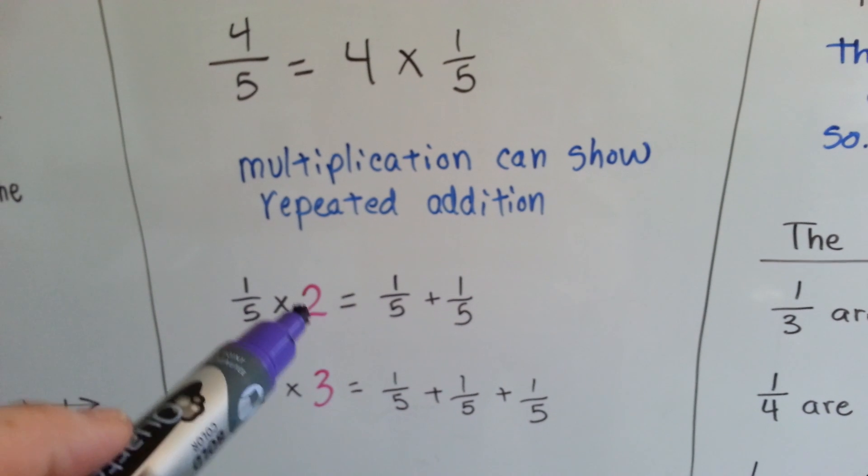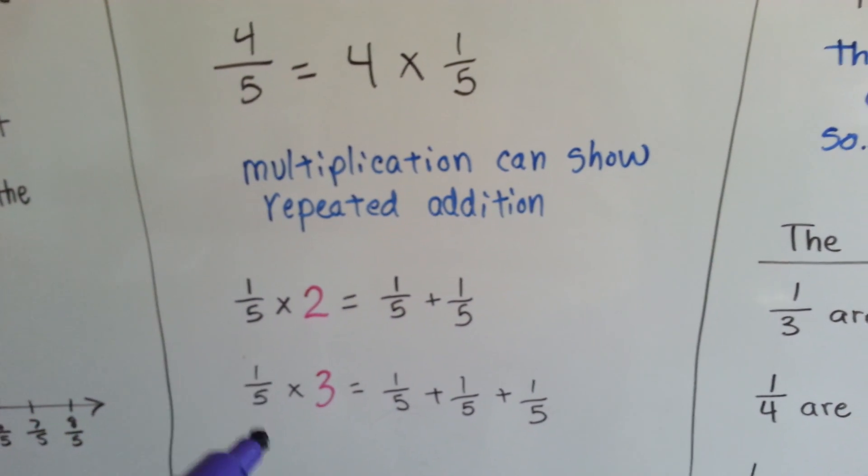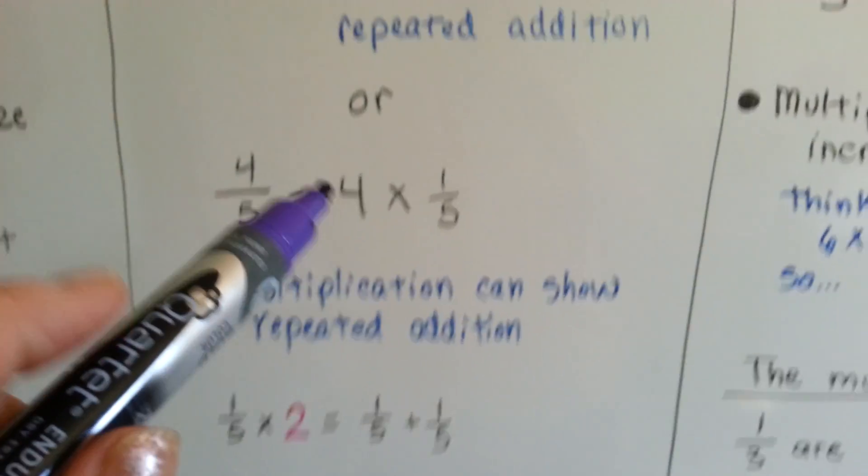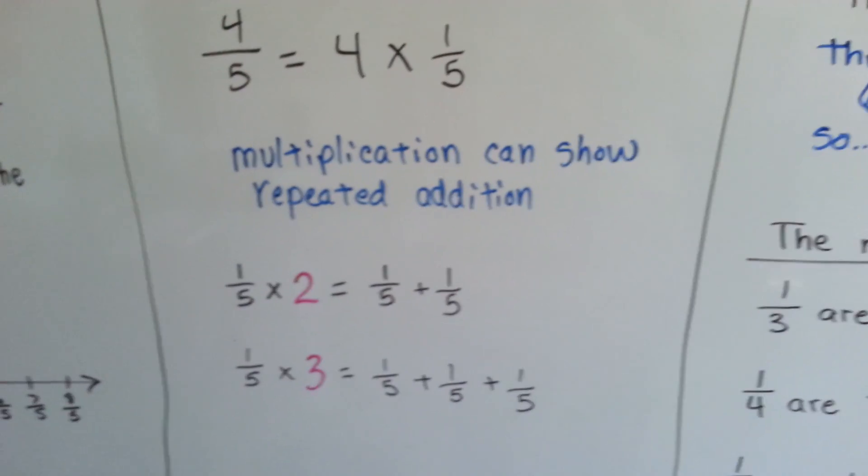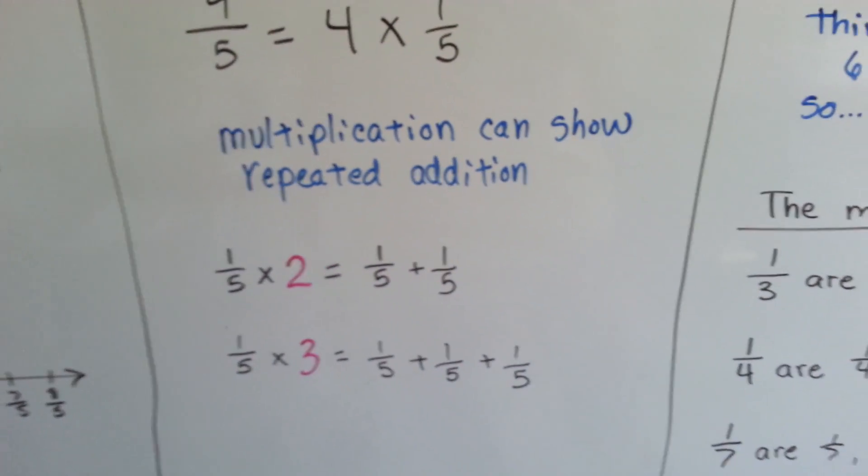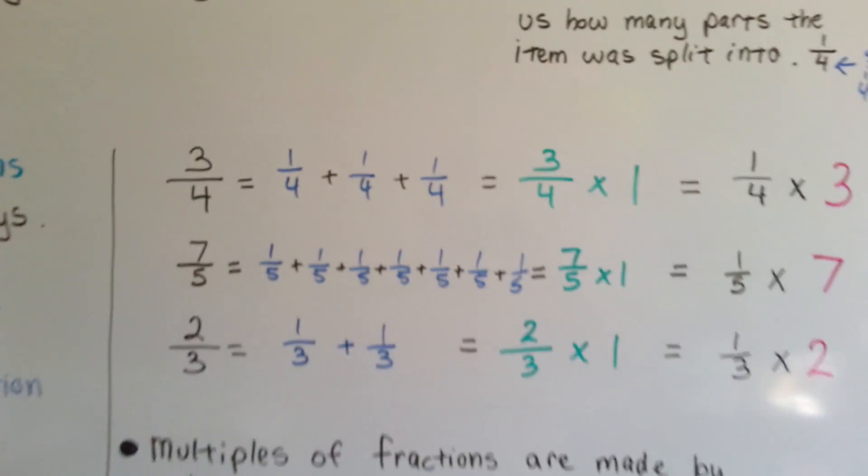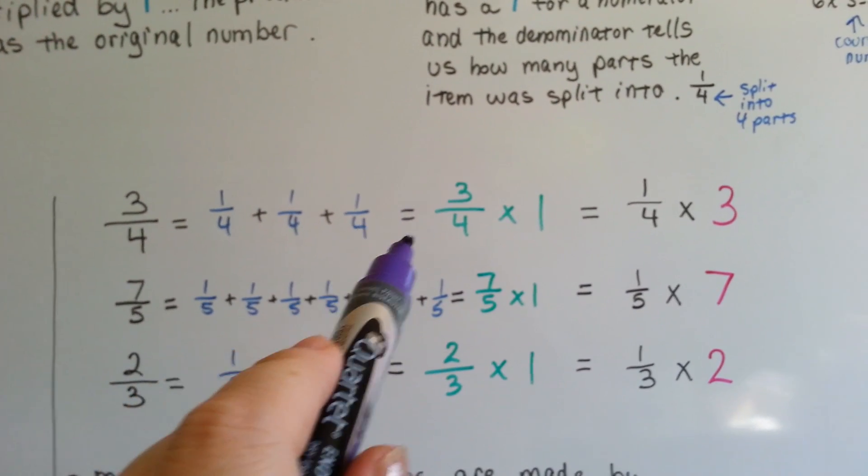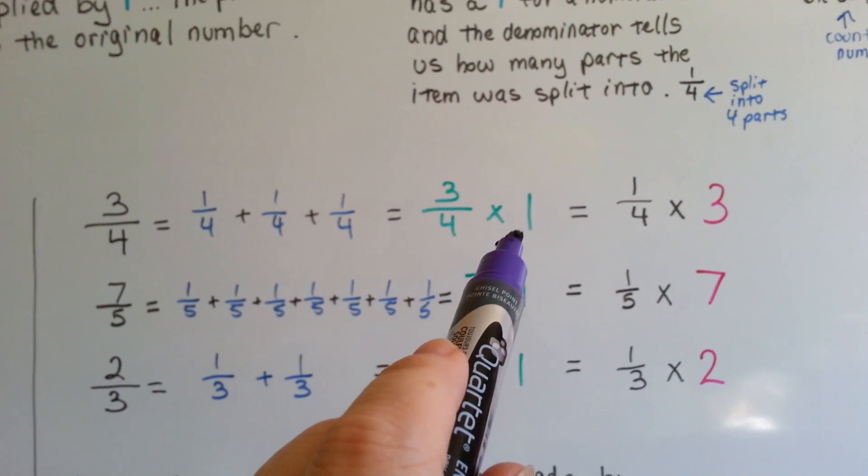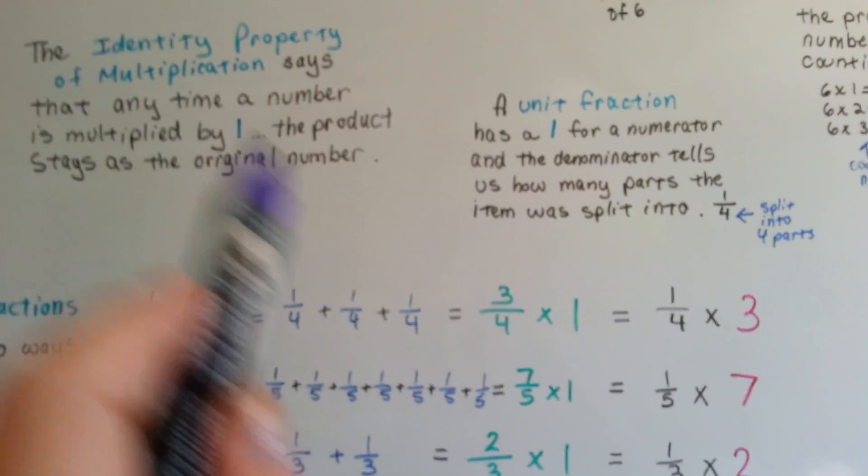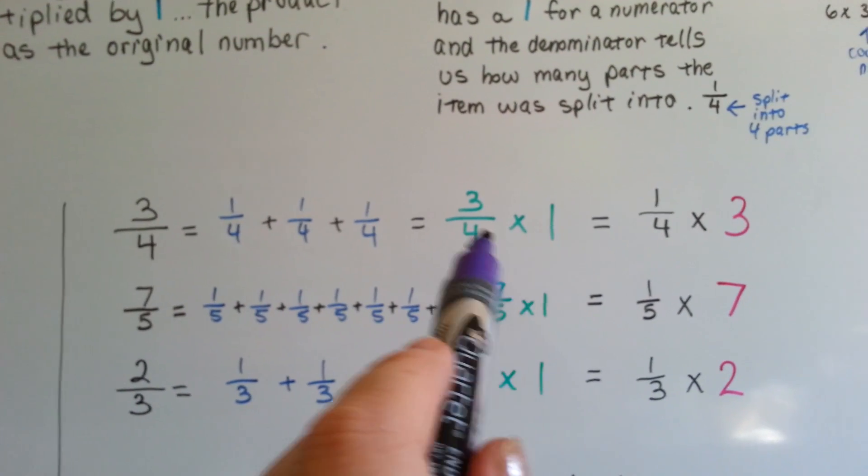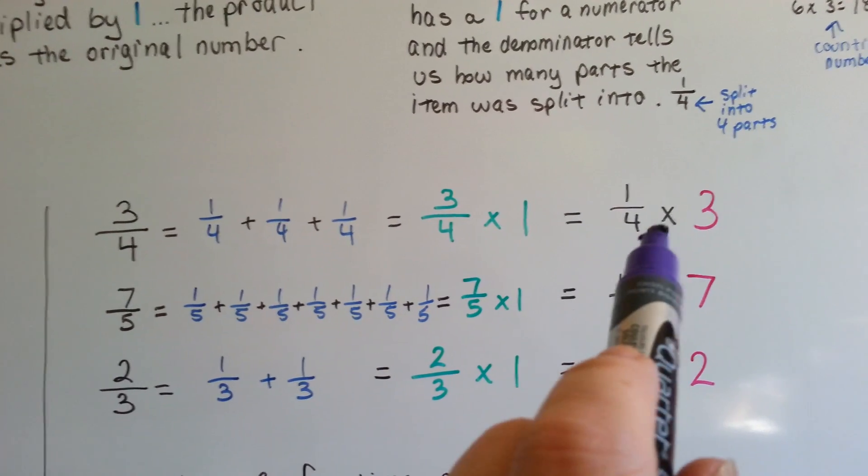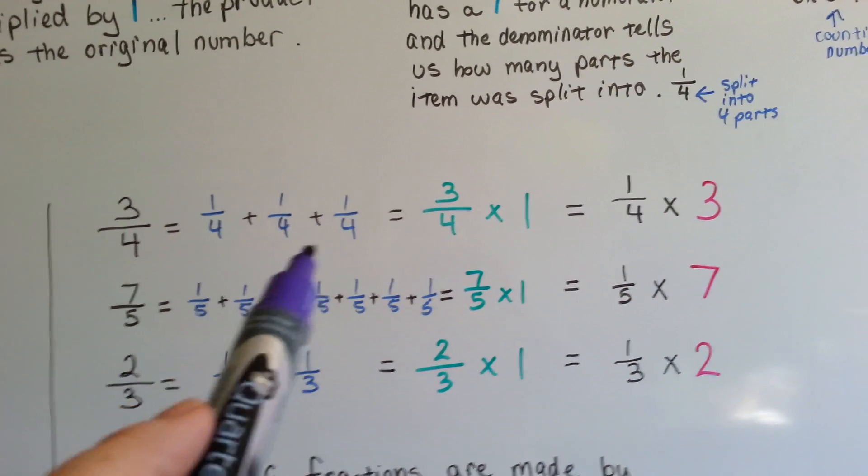1 fifth times 2 would be a 1 fifth plus a 1 fifth. 1 fifth times 3 would be 1 fifth plus 1 fifth plus 1 fifth. So, 4 times would be the 4 times. So, let's take a look at these. We have 3 fourths. Well, that's equal to 1 fourth plus 1 fourth plus 1 fourth.